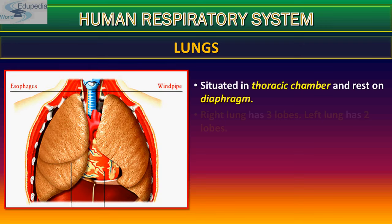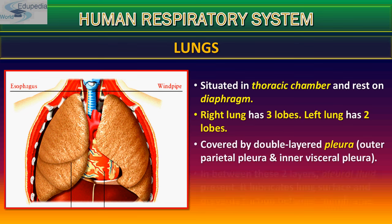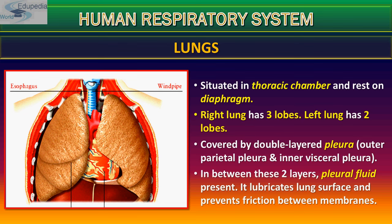The lungs are situated in the mid-thoracic chamber and rest on the diaphragm. The right lung has three lobes and the left lung has two lobes. The lungs are large, cone-shaped organs located either side of the heart. The right lung is slightly larger than the left lung. The lungs are covered by a double-layer structure known as pleura.